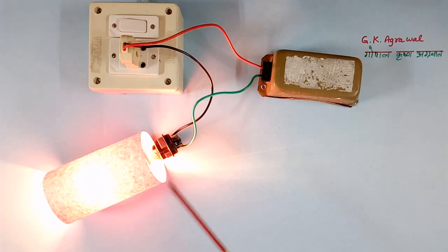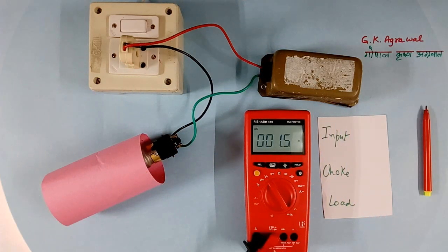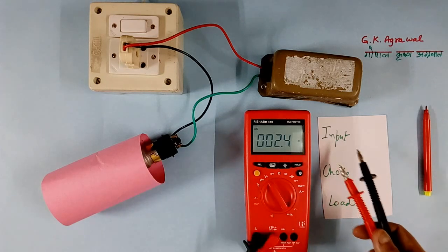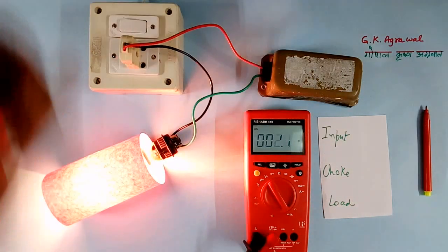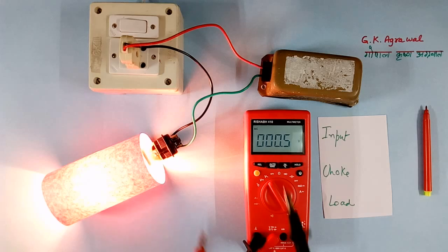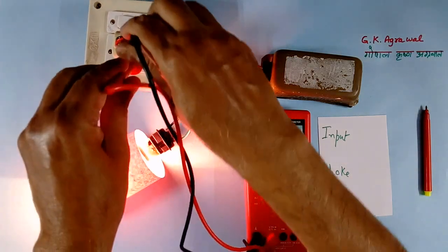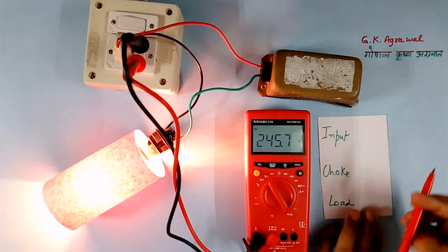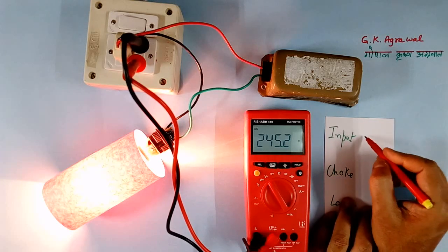Now whatever voltage comes, I will note down here. So I will switch on. Now first I will measure the voltage of incomer. That is showing 245V.